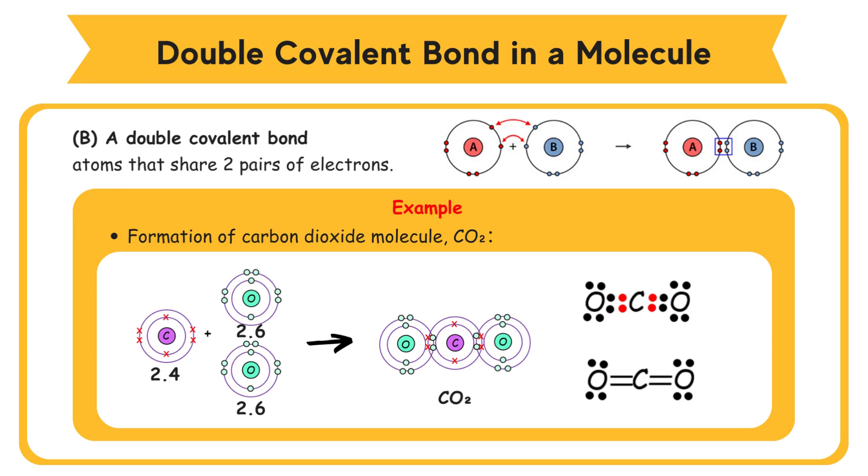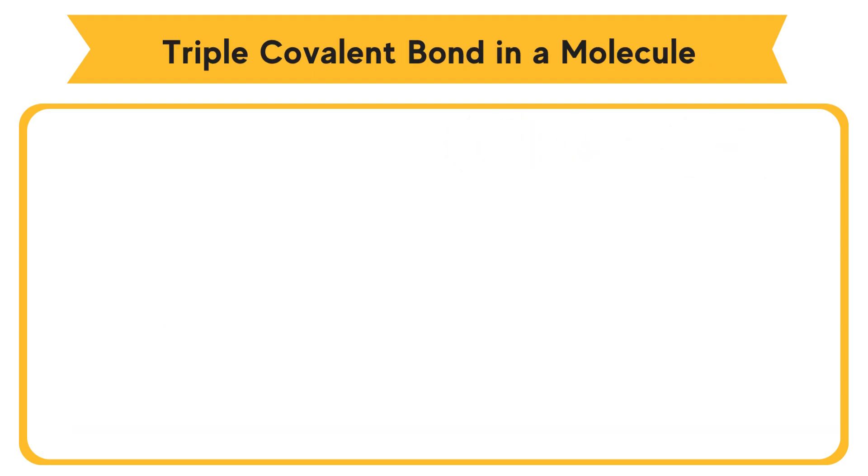One carbon atom C and two oxygen atoms O share four pairs of electrons to form double covalent bonds. Both carbon and oxygen atoms in the carbon dioxide molecule CO2 achieve the stable octet electron arrangements. A carbon dioxide molecule CO2 is formed.